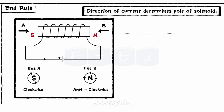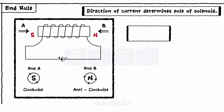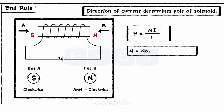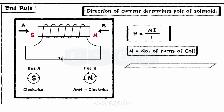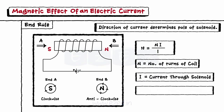The magnetic field strength of a solenoid is given as H equals N into I upon L, where N equals number of turns of the coil, I is the current through the solenoid, and L is the length of the conductor.